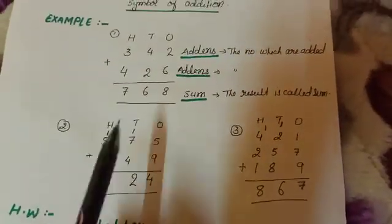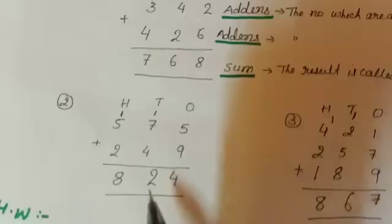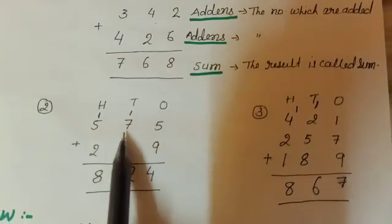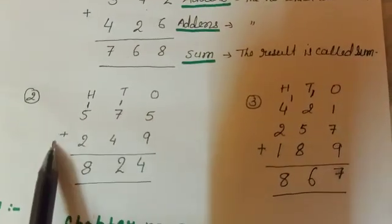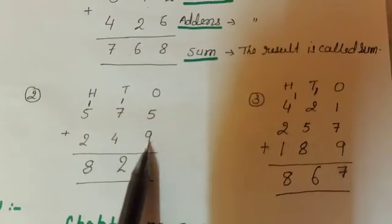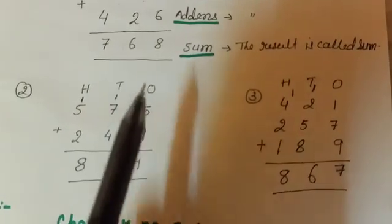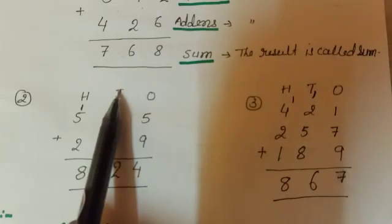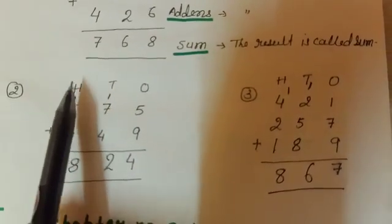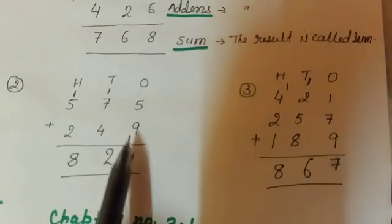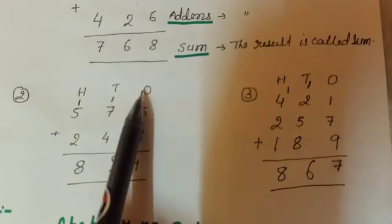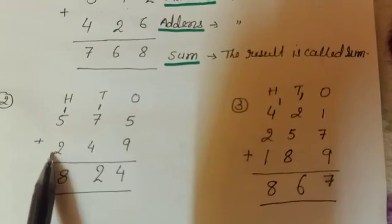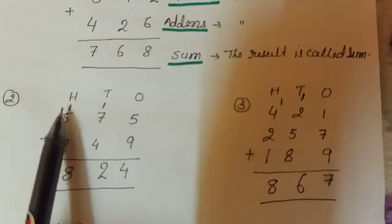Second example. Example number 2: 575 plus 249. Children see here, 5 is in place of ones, 7 is in place of tens, and 5 is in place of hundreds. Same, 9 is in place of ones, 4 is in place of tens, and 2 is in place of hundreds.